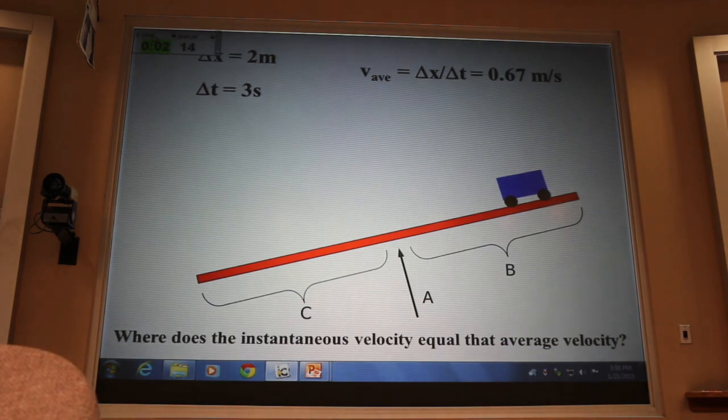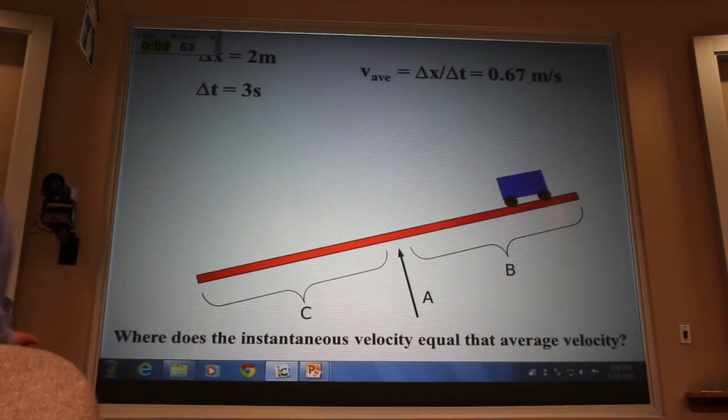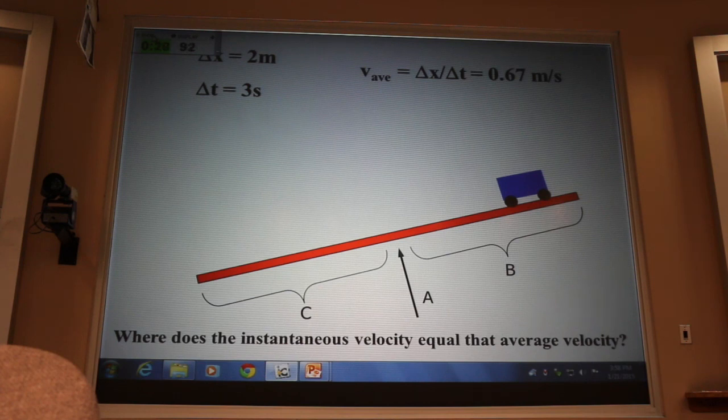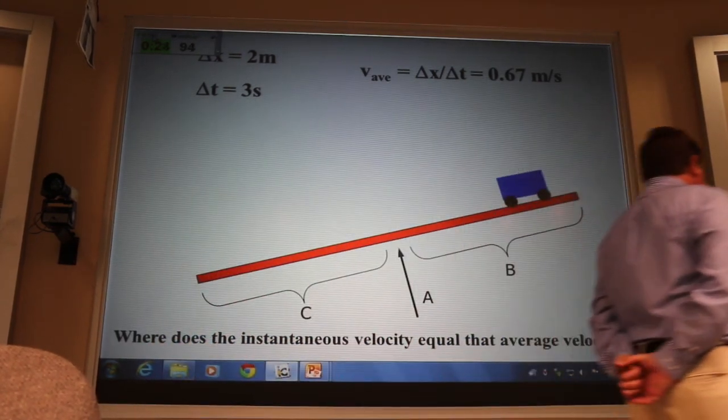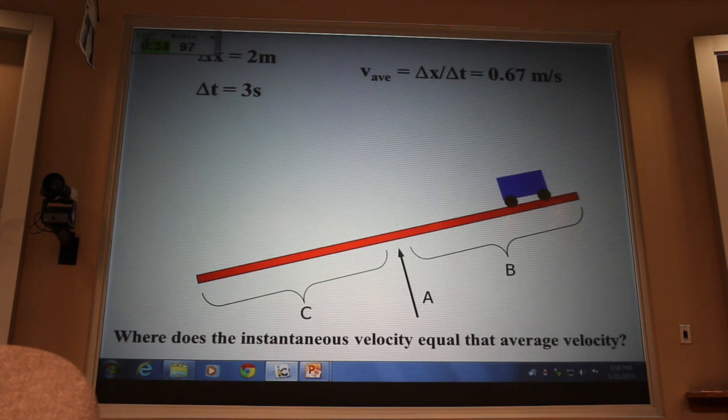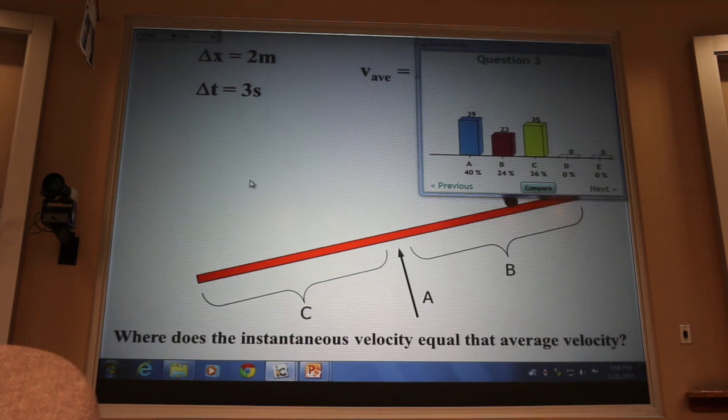Okay, now vote with your clicker. Where will the cart be when the instantaneous velocity on the speedometer is 0.67 meters per second? The average velocity for the whole journey. There's more than 94 of us. Come on. 96. Is that it? The answer is not A. The answer is B. At the top half of the ramp. We'll talk about that on Friday, people. See you then. Thank you.